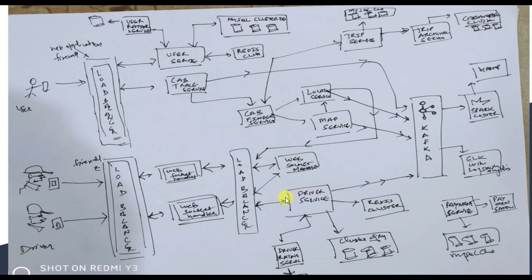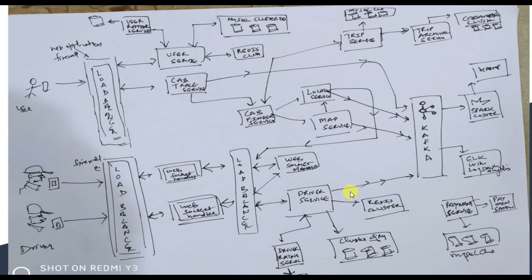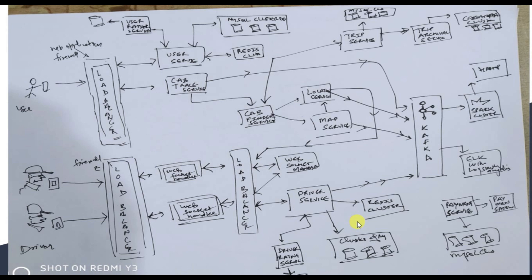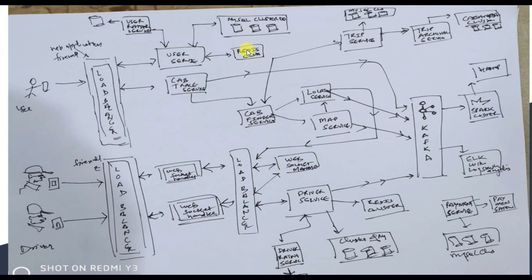There is also a Driver Service — just as we maintain user records, we maintain driver records. This shows driver profiles in the app: how many trips covered, customer feedback ratings, and so on. The Driver Rating Service has its own dedicated DB. For individual Driver Service we maintain a MySQL cluster, similar to the user service, and use a Redis cluster to prevent unnecessary DB hits. So far we've used WebSockets, MySQL clusters, and Redis.